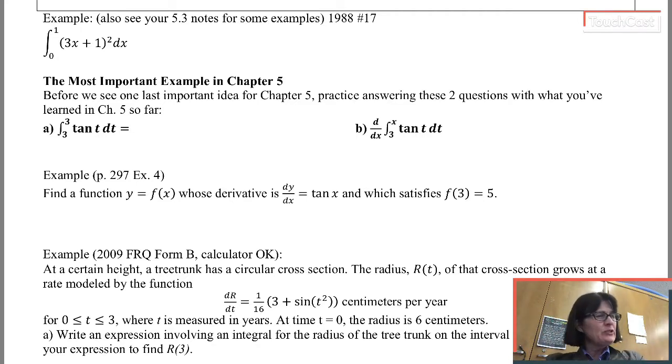The only antiderivatives I really know how to find right now are the ones I can think of off the top of my head because I know them from derivative rules, or I do know how to undo the power rule - add 1 to the exponent and divide by the new exponent. This one doesn't really fall into either category.